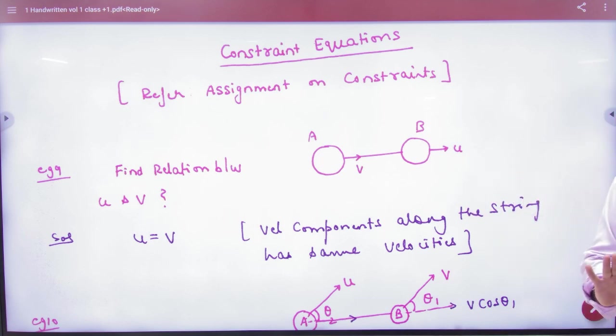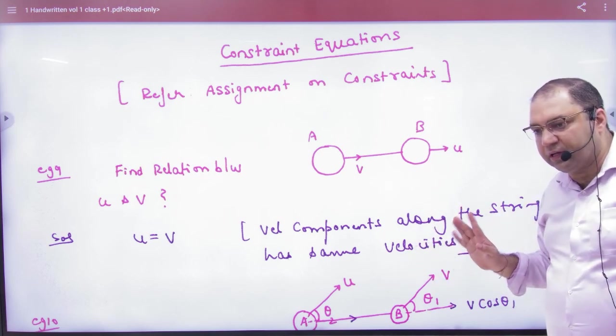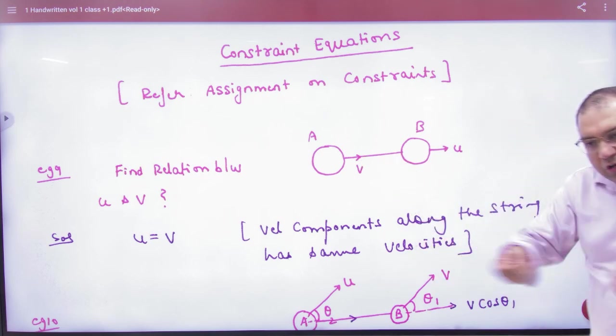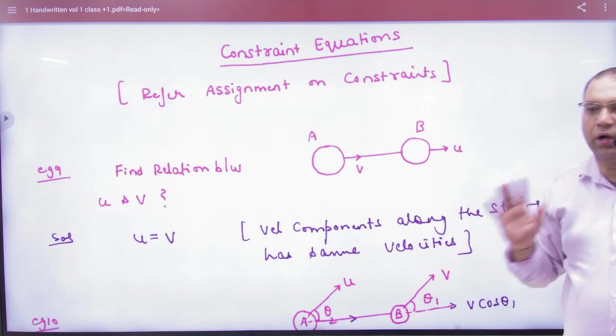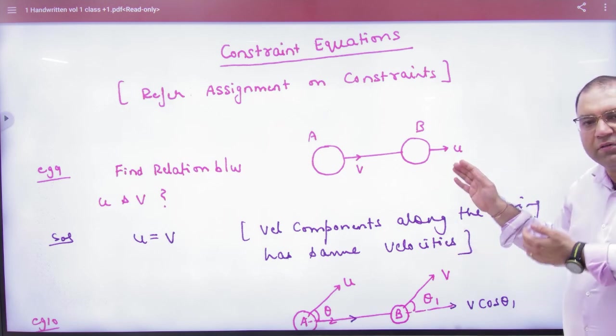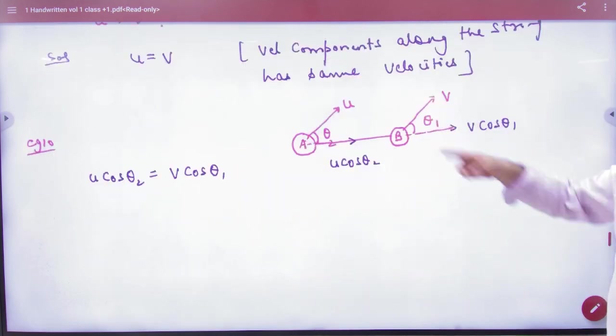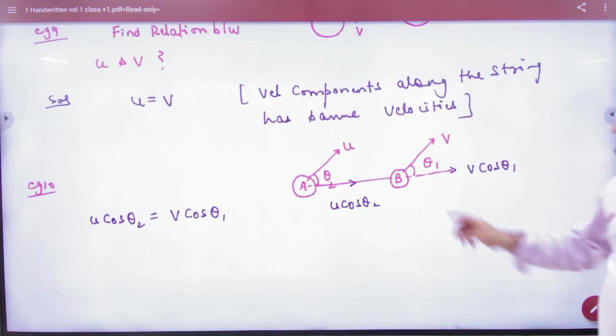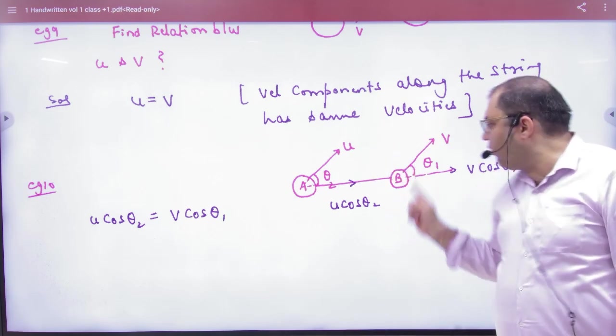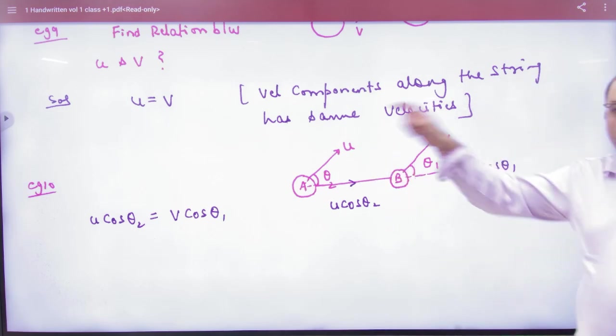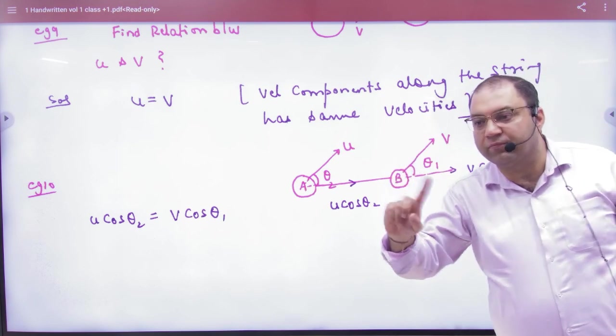You already know the rule. When we move with velocity, velocity components along the string have the same velocities. String along, the values of the velocity have the same magnitude. This is not the same, this is not the same, but this is the same. Velocity vector here, these two velocity vectors string along, not the same.